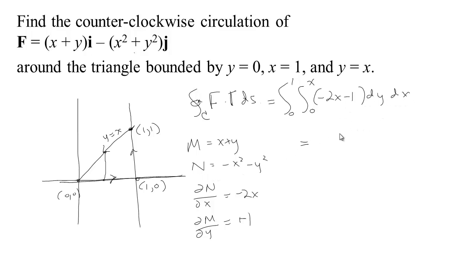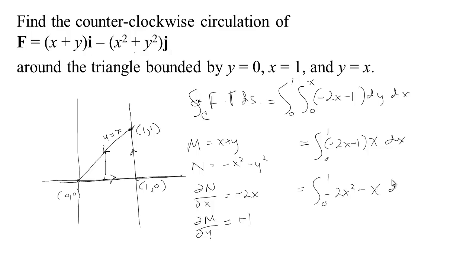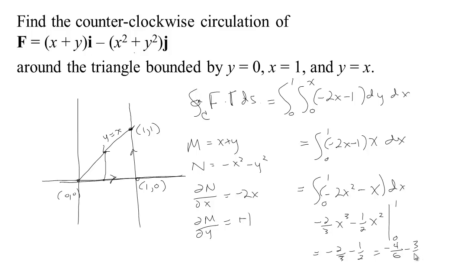So ∂N/∂x − ∂M/∂y = −2x − 1. We just do this area integral — no parametrizations needed. Integrating −2x − 1 with respect to y from 0 to x gives −2x² − x. Then we integrate from 0 to 1: the antiderivative is −(2/3)x³ − (1/2)x², evaluated between 0 and 1. Plugging in 1 gives −2/3 − 1/2 = −4/6 − 3/6 = −7/6. That's our circulation integral, computed entirely as an area integral.